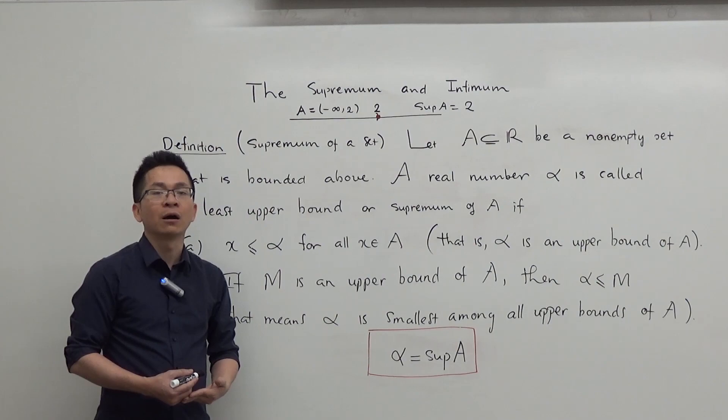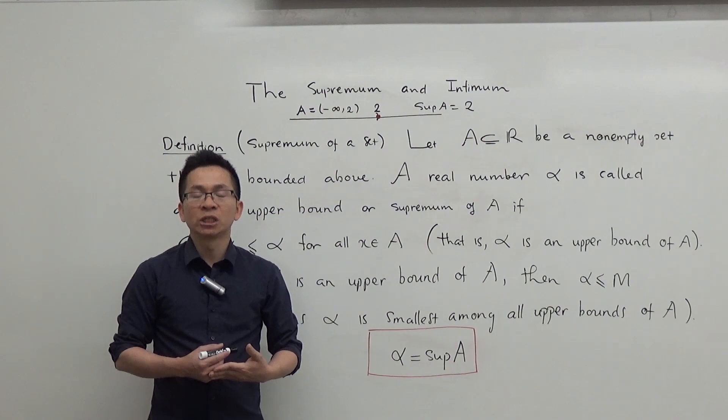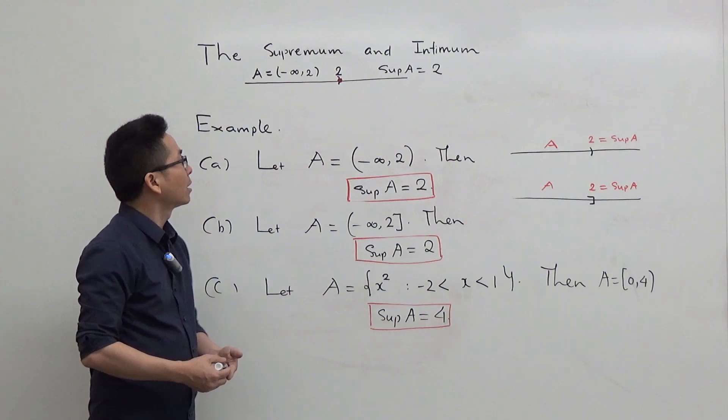We can prove from the definition that if A has a least upper bound or supremum, then that least upper bound is unique. Therefore, we denote by sup A the least upper bound or the supremum of the set A.